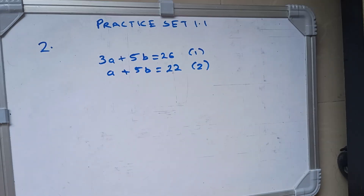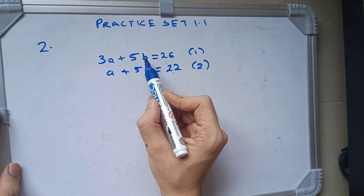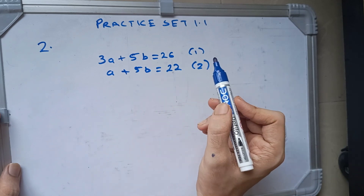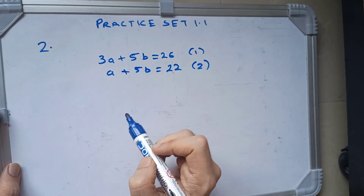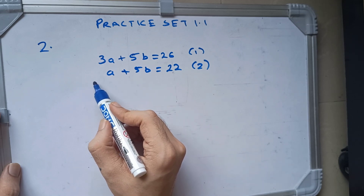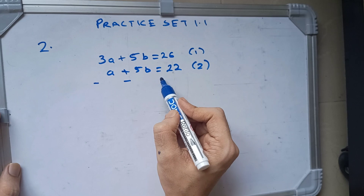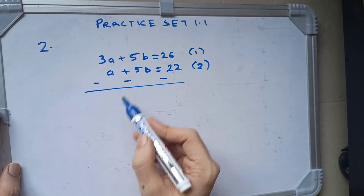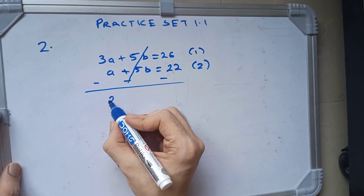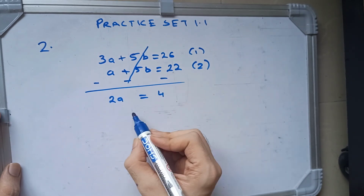Let's start the next sum. Simultaneous equations: we have 3a plus 5b is equal to 26, and a plus 5b is equal to 22. Here 5b is the same on both sides, so we can subtract. After subtracting, 5b and 5b cancel. So we have 2a, and 26 minus 22 is 4.